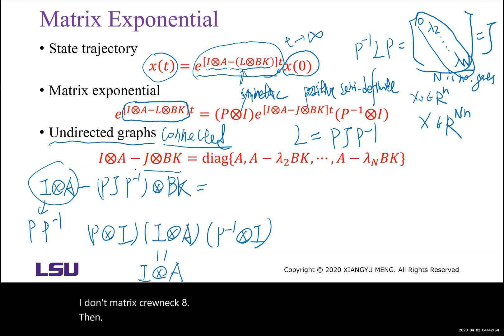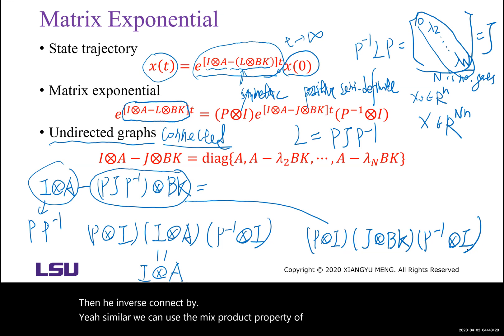So because of the mixed product property of the Kronecker product, then we know it equals to identity matrix Kronecker A. Then for this part, it can be written as P Kronecker I, then J Kronecker BK, then P inverse Kronecker I. Similarly, we can use the mixed product property of Kronecker product, then this is P, J, P inverse, then BK connect BK.